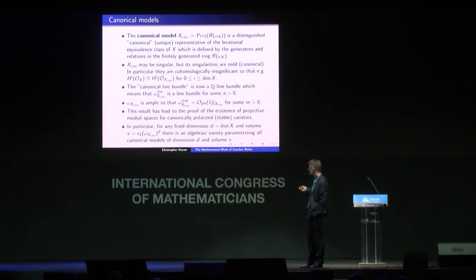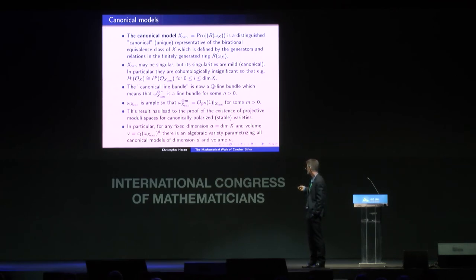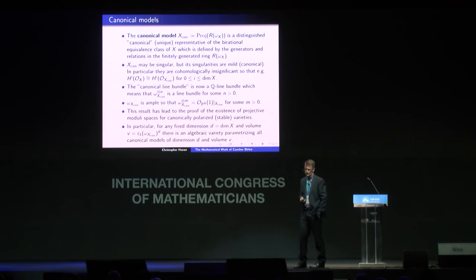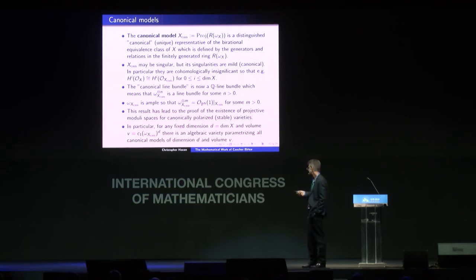The canonical model has many nice properties. One property it does not have is smoothness — it might actually be singular. However, the singularities are very mild; they're known as canonical singularities, and in particular they are rational singularities. Another feature is that the canonical line bundle is no longer a line bundle in the usual sense — it's a ℚ-line bundle, meaning some positive tensor power becomes a line bundle. And a really nice property is that the canonical line bundle is ample, so under some appropriate tensor power there is an embedding into projective space. This is extremely useful in practice and has led to the existence of a nice projective moduli space for canonically polarized varieties and their degenerations.